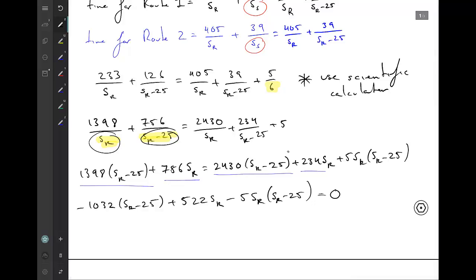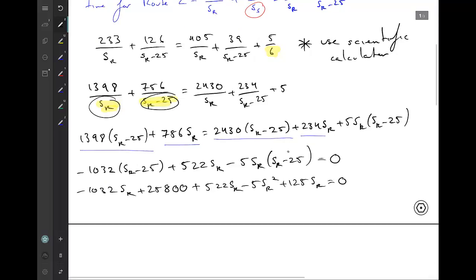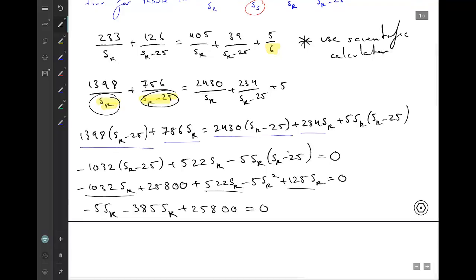Now we can go ahead and expand again just using your scientific calculator. So negative 1032 SR plus 25,800 plus 522 SR minus 5 SR squared plus 125 SR equals 0.